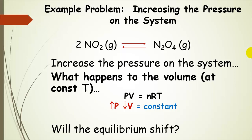Let's talk about this with examples because it's a little bit easier to understand that way. Here's the same reaction that we've been looking at: nitrogen dioxide in equilibrium with dinitrogen tetroxide. Now we're going to increase the pressure on the system.